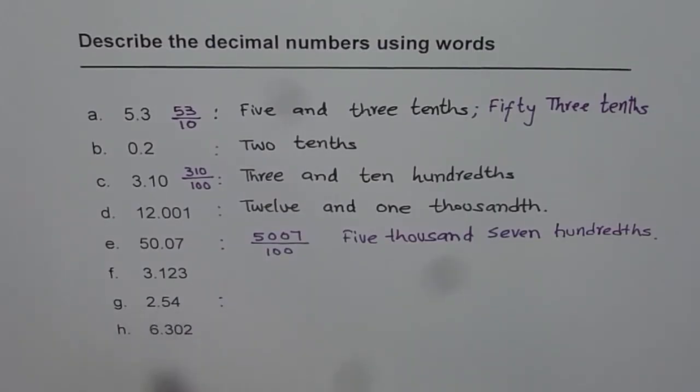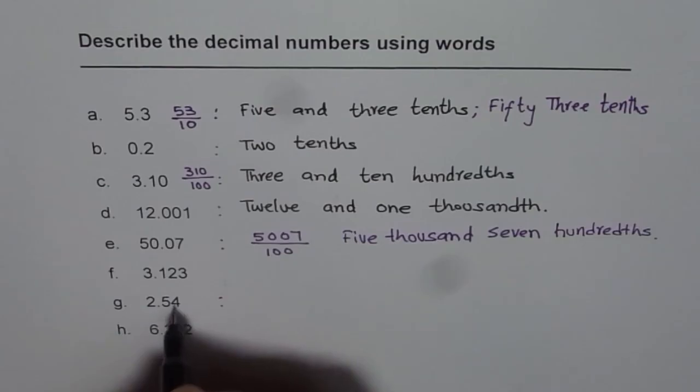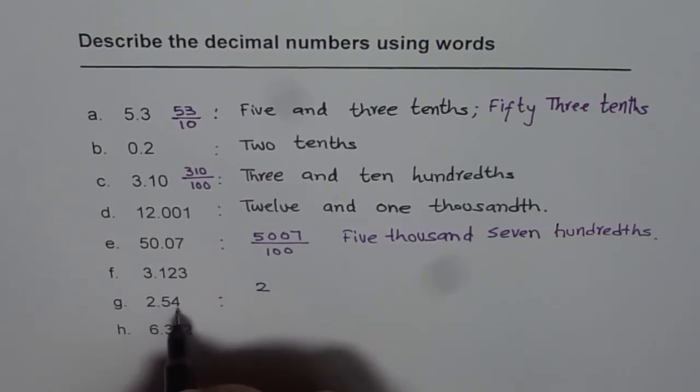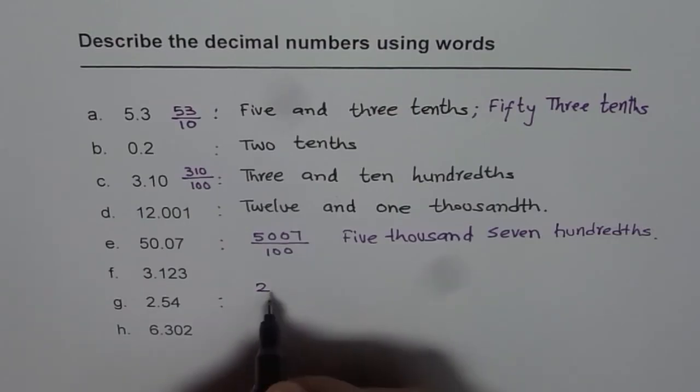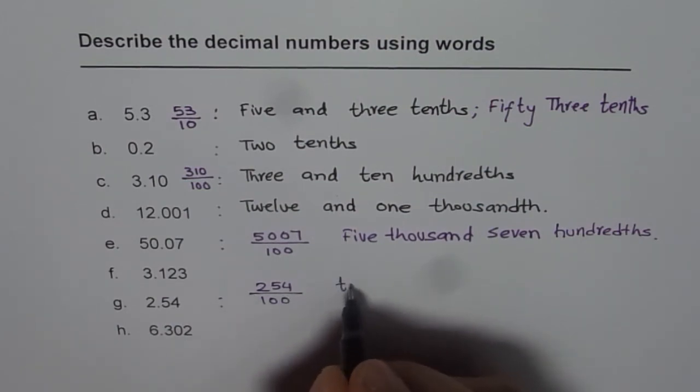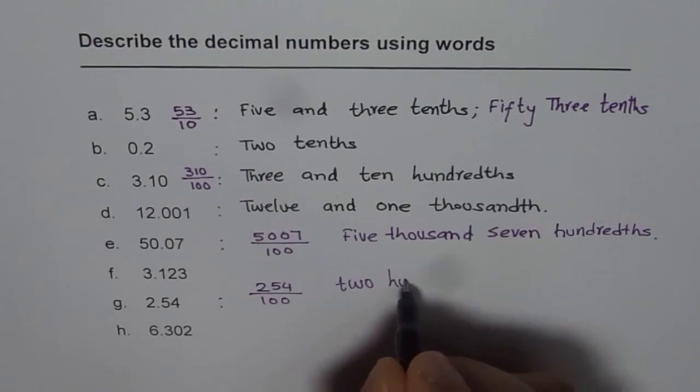Now let me write 2.54 for you. 2.54 or 2 and 54 hundredths could be written as 254 over 100. So I can say this as 254 hundredths.